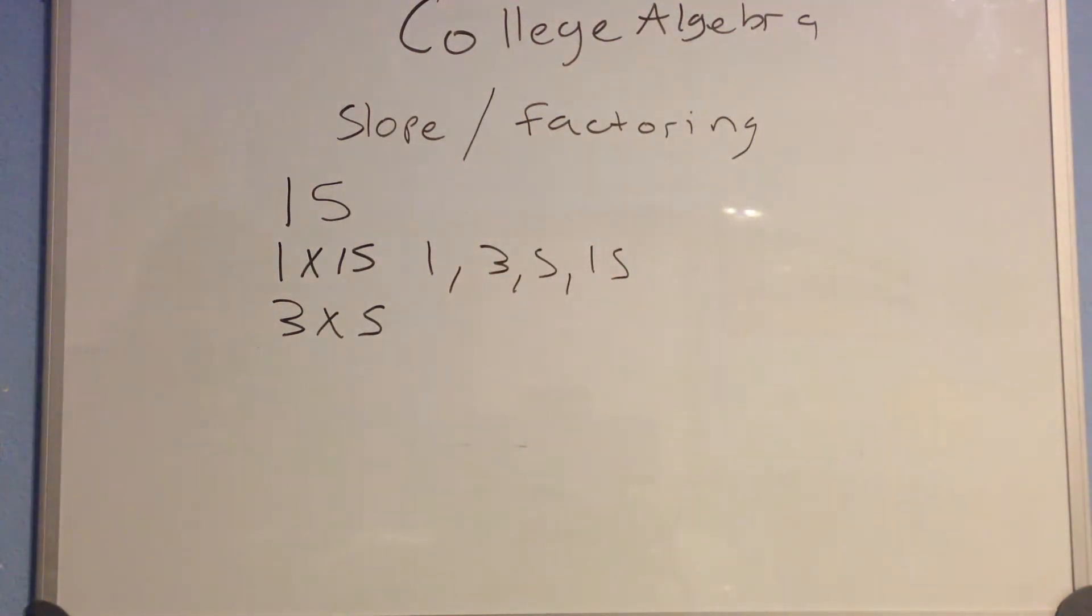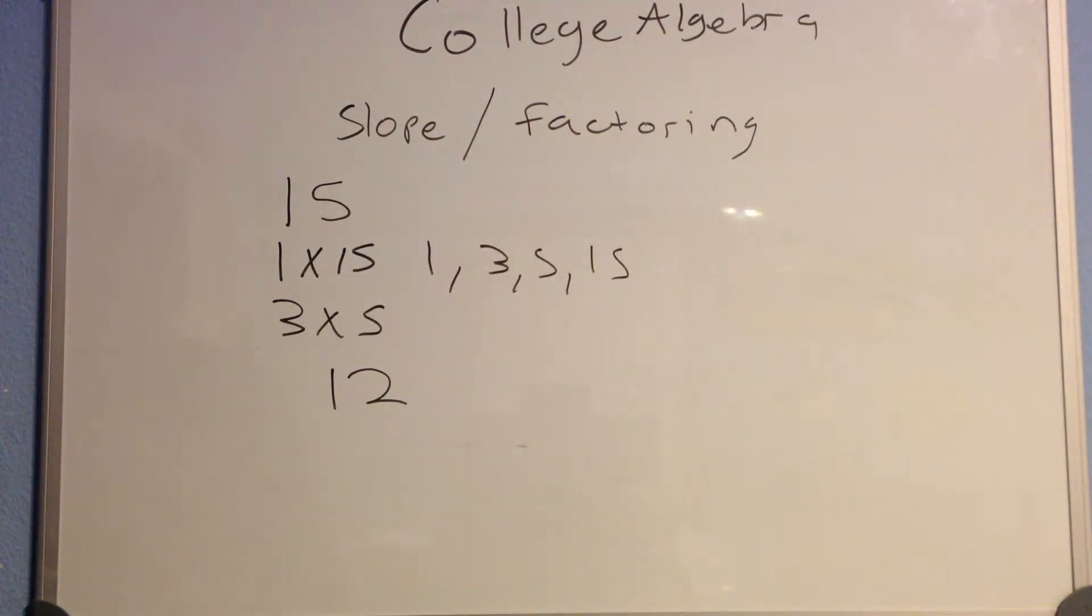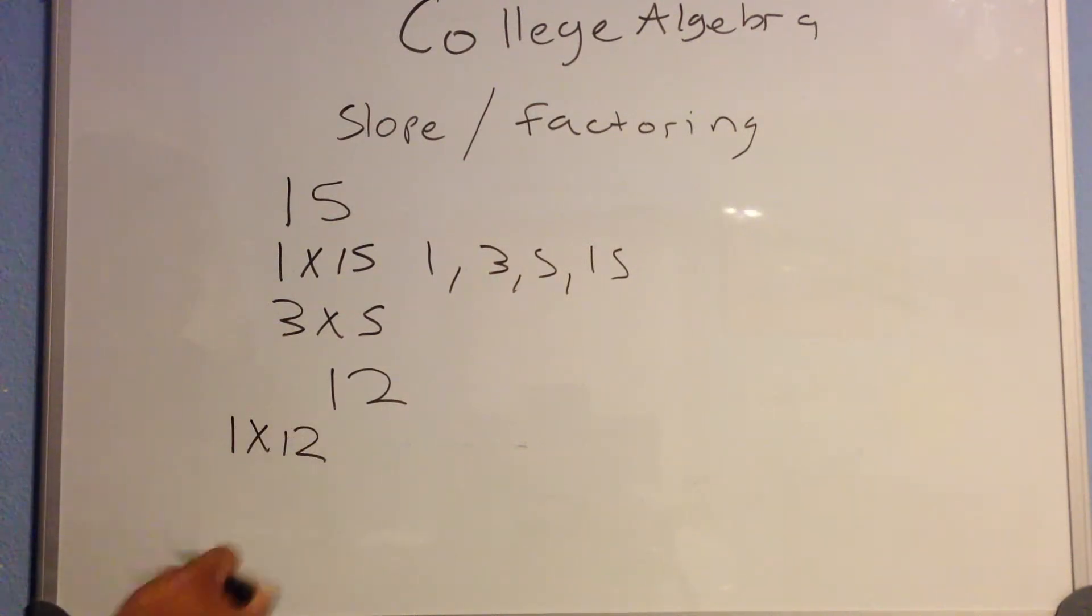Alright, let's do one more. Let's get the factors of 12. What are the factors of 12? The numbers you multiply would be 1 times 12, and 3 times 4. Those are your factors for 12.